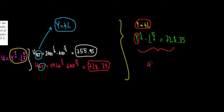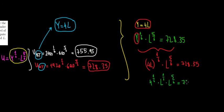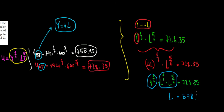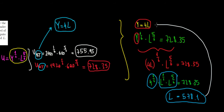Substituting gives us 4L to the power of 1/6 times L to the power of 5/6 equals 728.35. Opening the brackets: 4 to the power of 1/6 times L to the power of 1/6 times L to the power of 5/6 equals 728.35. Since L to the 1/6 times L to the 5/6 equals L, we divide 728.35 by 4 to the power of 1/6 to get optimal leisure L = 578.1 hours. The corresponding income is 4 times 578.1, which equals 2,312.4 euros.